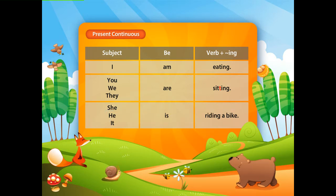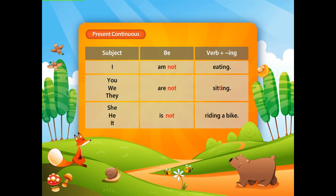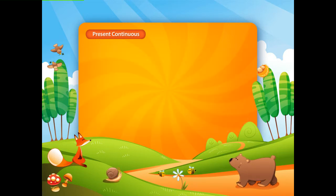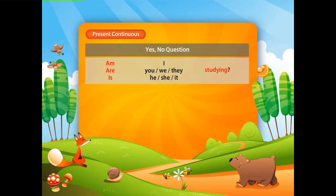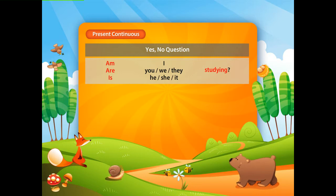To form the negative in the present continuous, add 'not' after the B-verb — am, are, or is. The present continuous also has a question form.